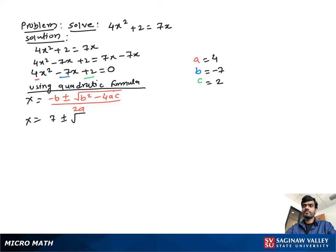Now substituting the value of a, b, c in this equation, we get x equal to 7 plus minus square root negative 7 square minus 4 times 4 times 2 over 2 times 4.